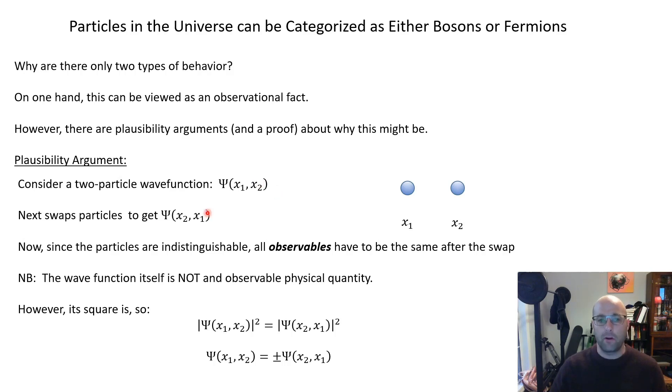Since the particles are indistinguishable, we would expect nothing observable to change after the swap. It's important that you can't observe the wave function by itself. You can observe things that are determined by the wave function—you can do experimental tests of quantum mechanics—but you never sit down and measure Ψ. What you can measure though is Ψ squared. And so what we know is that Ψ squared before the swap has to be Ψ squared after the swap.